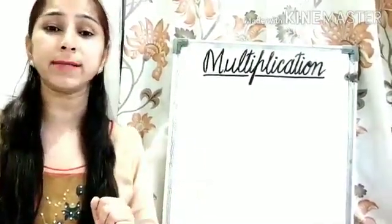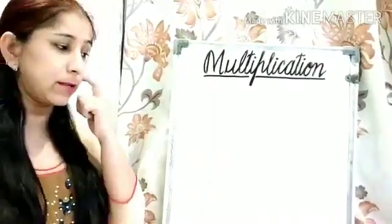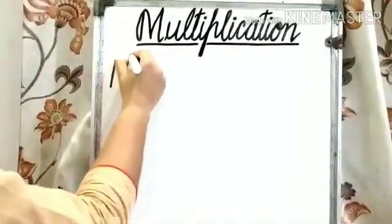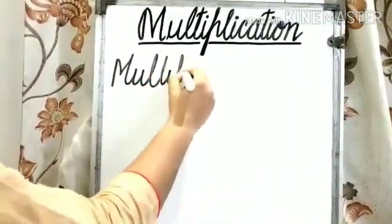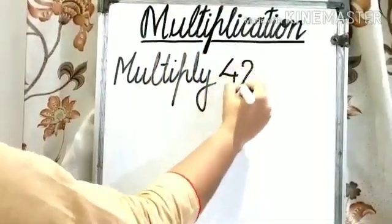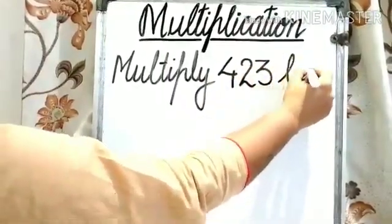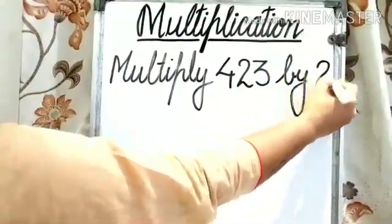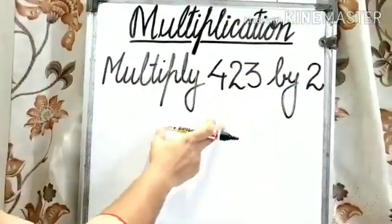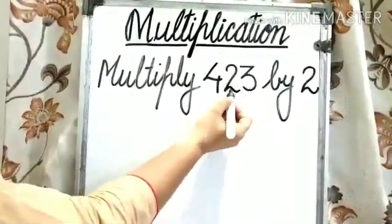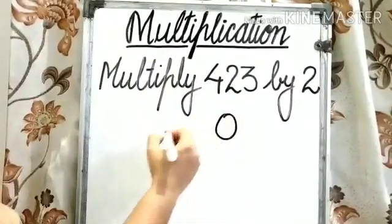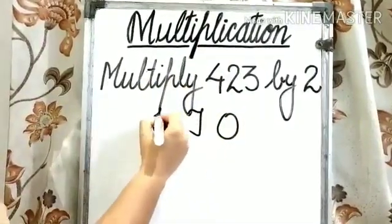Let us understand by solving different examples. The first example is: multiply 423 by 2. First of all, we need to arrange this number under the headings of 1s, 10s, and 100s. So write down the headings first: 1s, 10s, 100s.